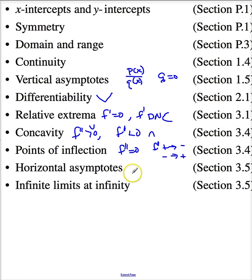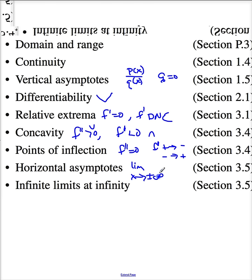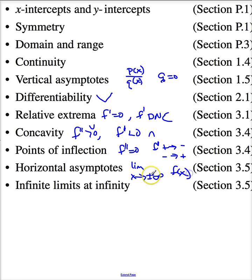You're going to look for horizontal asymptotes. You're going to look at what happens here. You're going to look at the limit as x goes to plus and minus infinity of your function to see if it approaches a number if it shoots off to infinity. And then you're going to look at all infinite behavior.